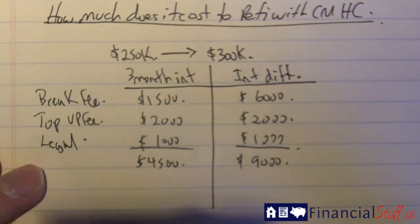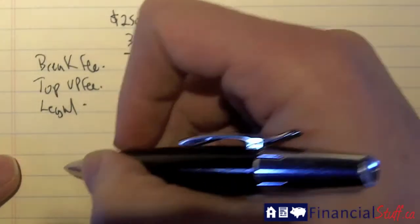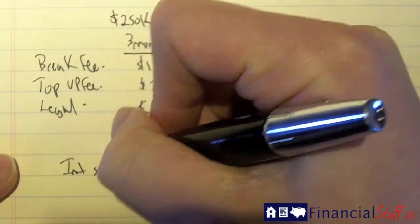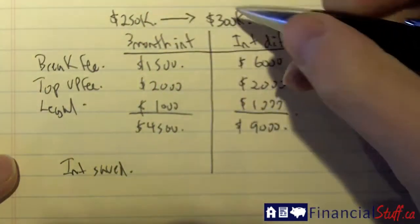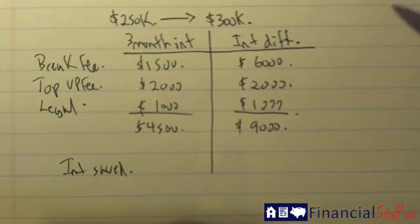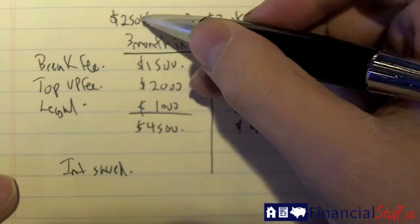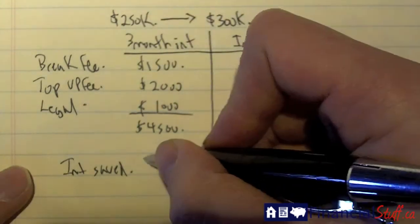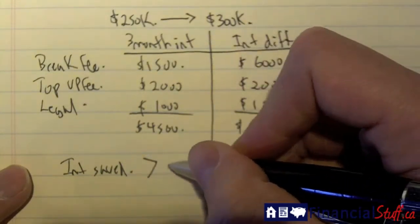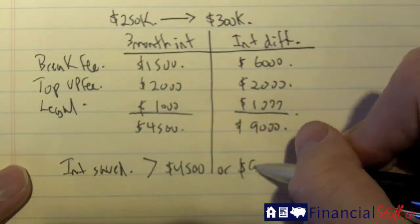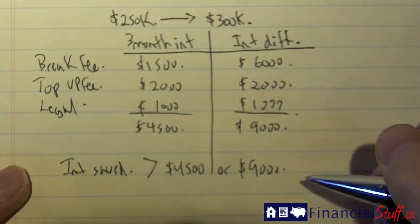So, the question is, should I do it? Well, then what you'd have to do is calculate the interest saved from using that $50,000 to pay off credit cards, car loans, student loans, etc., and also lowering the rate from your current mortgage to a new mortgage. Would that be greater than $4,500 in this situation, or $9,000 in this situation?